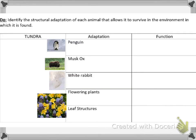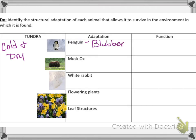First, we have the tundra. In the far left-hand column, the tundra is cold and dry. And then we're going to talk about these animals. The penguin's adaptation is blubber. And what's the function of blubber? To keep them warm.